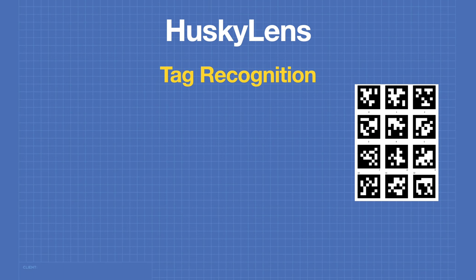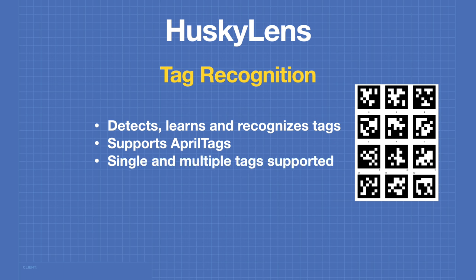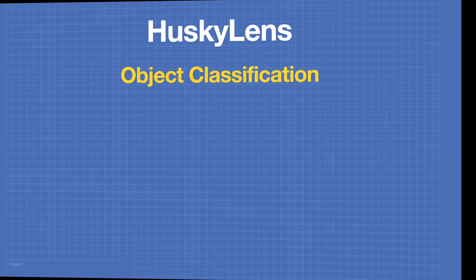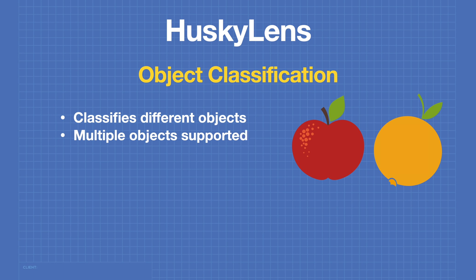In tag recognition mode the Husky Lens can detect, learn, and recognize tags. The device supports April tags, a tagging mechanism developed at the University of Michigan, with both single and multiple tags supported. In object classification mode the Husky Lens can be trained to recognize different objects — for example apples, oranges, pears, and bananas. Unlike object recognition mode, however, it does not report the object's position and will only report one object at a time.